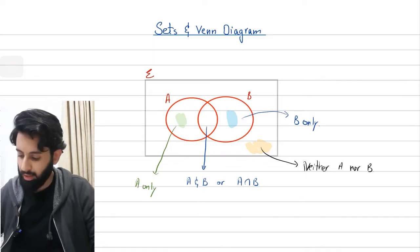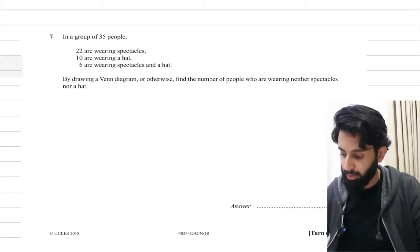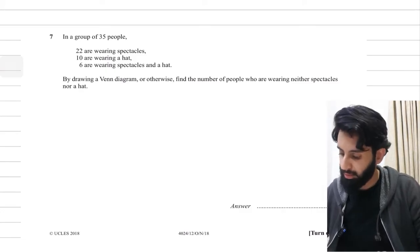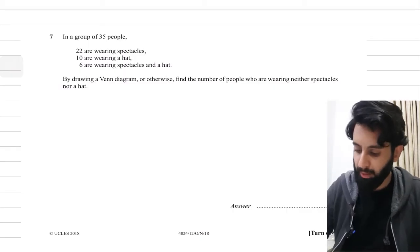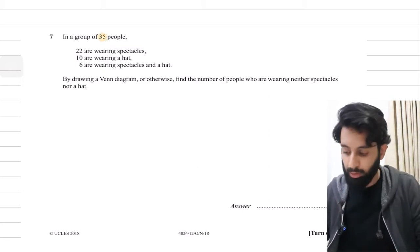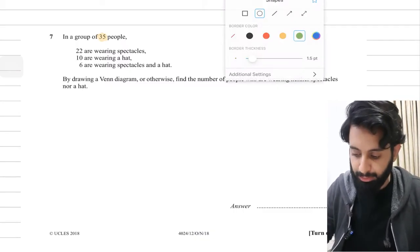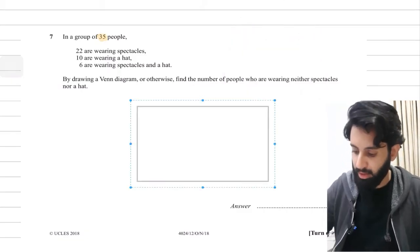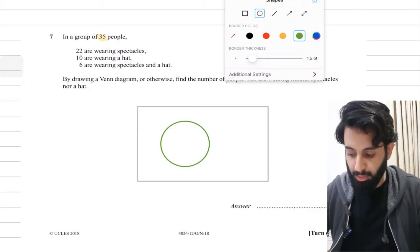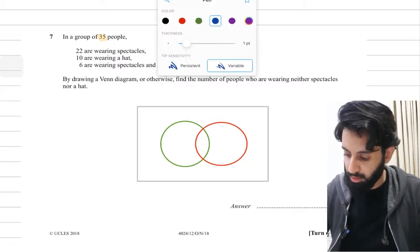Here's a question I'd like to solve. In a group of 35 people, 22 are wearing spectacles, 10 are wearing a hat, and 6 are wearing both spectacles and a hat. By drawing a Venn diagram or otherwise, find the number of people wearing neither spectacles nor a hat. Reading the question again: the group of 35 tells me the total inside the universal set. The green circle represents people wearing spectacles and the red circle represents people wearing a hat.